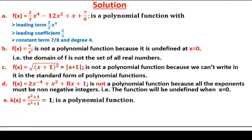The last example: k(x) = (x² + 1)/(x² + 1). This is a polynomial function. The domain is the set of real numbers and we can put it in standard form by simplifying the expression: k(x) = 1. This is a polynomial function — a constant function.